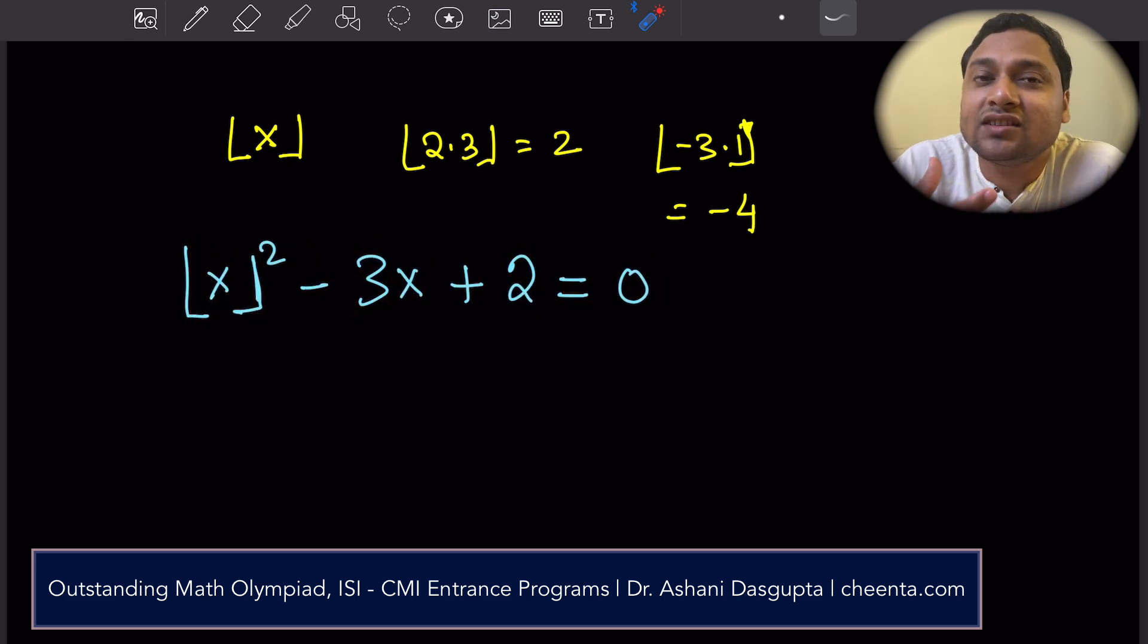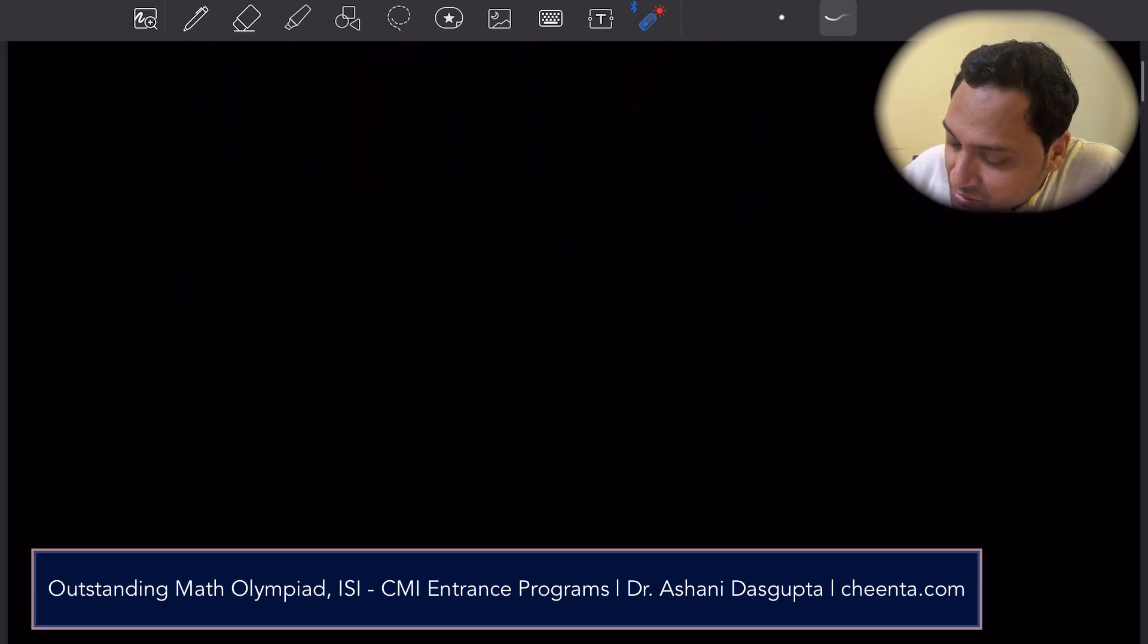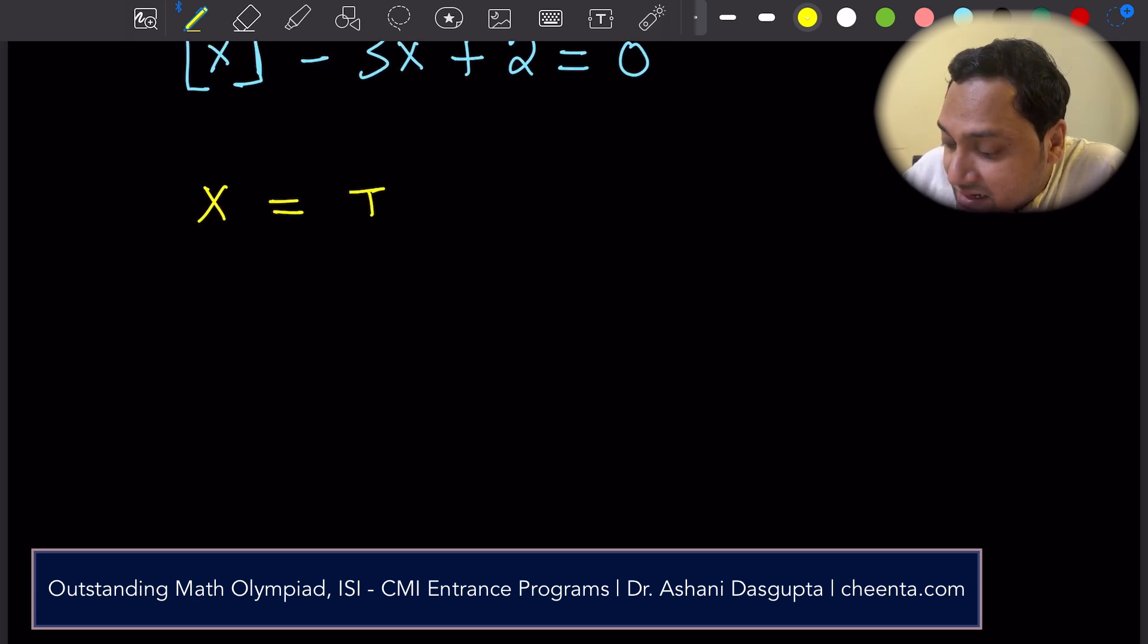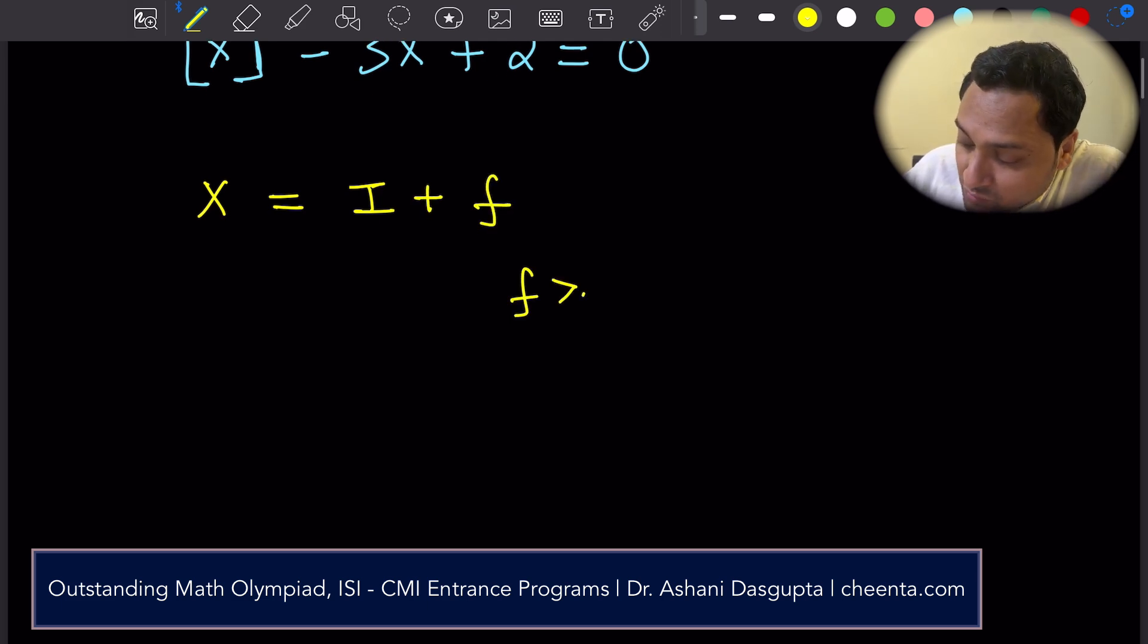So I'll tell you a strategy that usually works with this sort of problems. What you do is you start with x, any number x, and you write it as a sum of an integer and a fraction. The fraction is always greater than or equal to 0. The integer can be positive, negative, or 0.